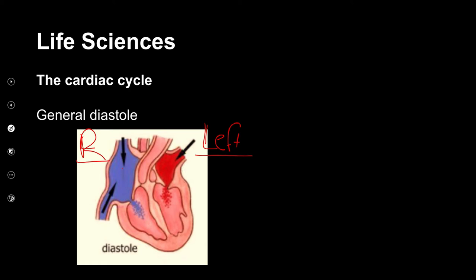I want you to imagine the first thing is the heart relaxing — just relaxes. And when it relaxes, blood must come in, it must go to the top, it must go to the bottom, and it must go out. Always remember those three: in, top, bottom, out. And when my heart relaxes, the blood flows into the top chambers, into the atria. It's relaxed and it can just flow in.